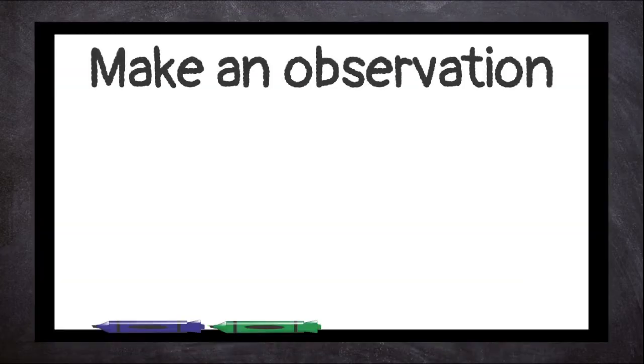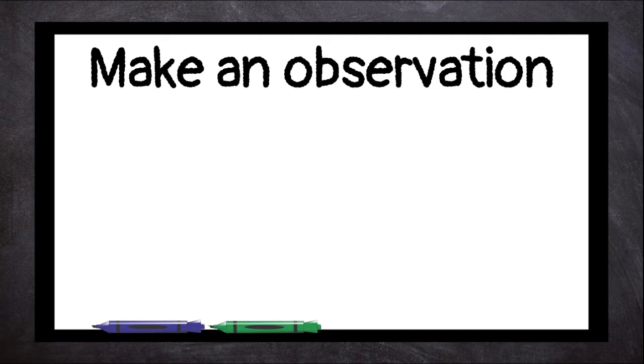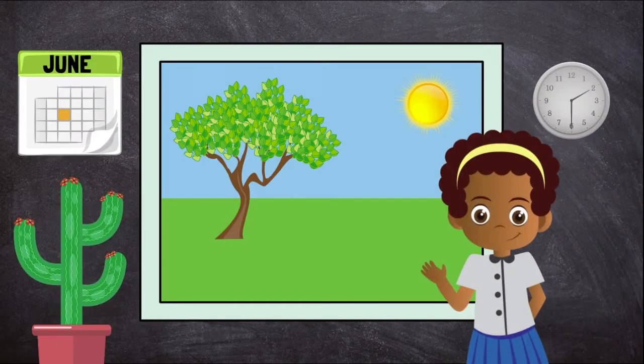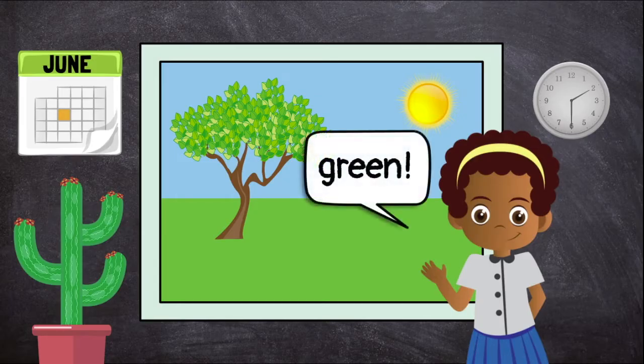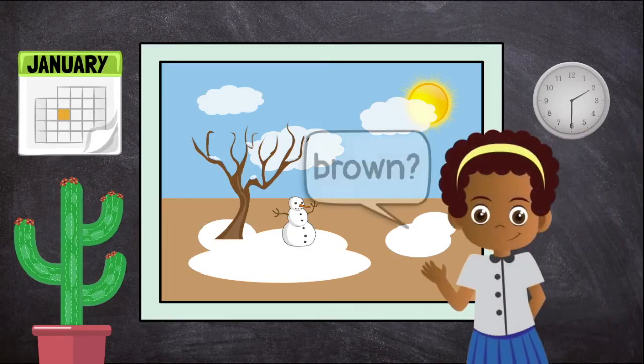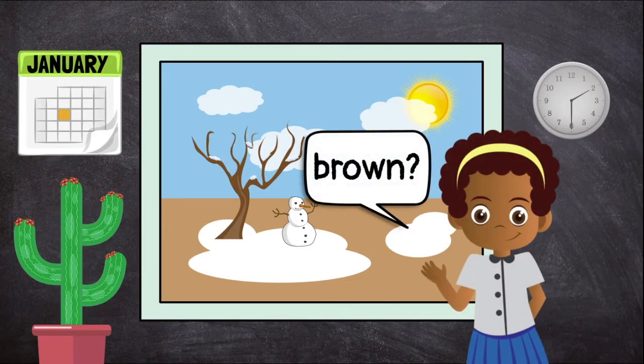The first step of the scientific method is to make an observation. To observe something is to look at it and realize something. For example, you may be looking out the window and notice that all the grass on the playground is green. In winter, you may notice that the grass turns brown. You have just made an observation.